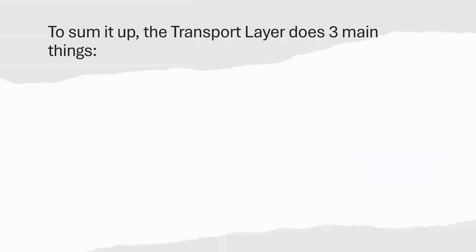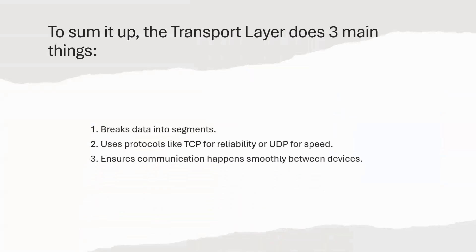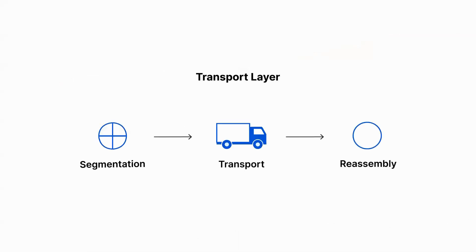To sum up everything, the transport layer does these three main things: it breaks down data into segments, uses protocols like TCP for reliability or UDP for speed, and ensures communication happens smoothly between devices. That's layer four, the transport layer, in a nutshell. If you found this video helpful, hit the like button, and don't forget to subscribe for more tech breakdowns. See you in the next video.